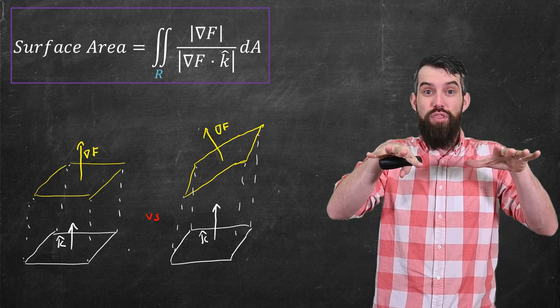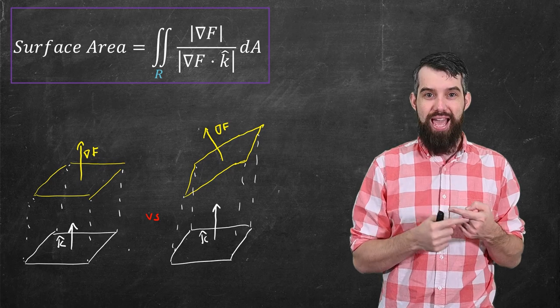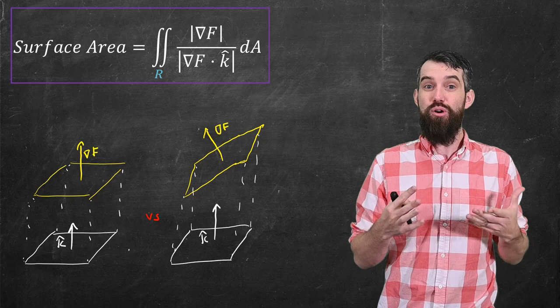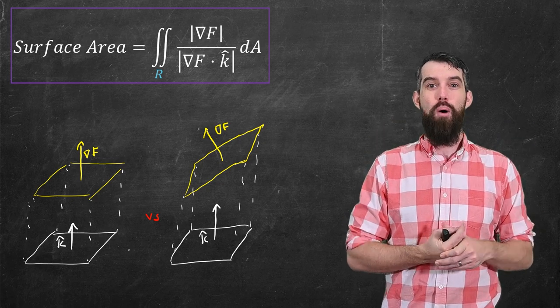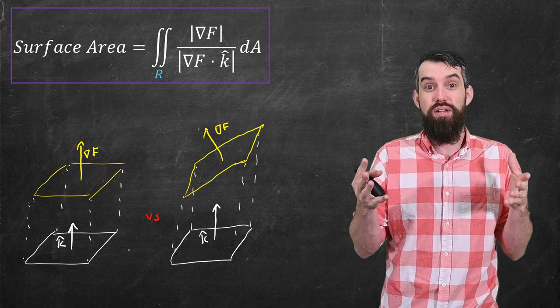Indeed the more the plane is twisted, the more the gradient of F dot k hat gets smaller, and if it's smaller in the denominator it's bigger overall. Basically we've got a ratio between the original length of the gradient vector, and then this portion of the gradient vector in the k hat direction. That is our scaling factor.